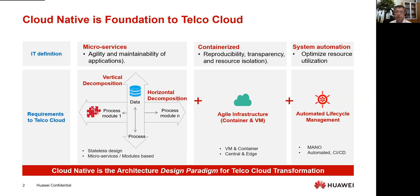The third part is system automation. We started to do this in operators' networks. But for operators, operation and maintenance is very complicated — it needs to consider the inheritance of existing functions. And by introducing the separation of hardware and software layers, the current OAM procedure becomes even more complicated. Automation is mandatory, but this is a very complicated part, so I will not talk about it today.